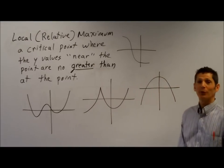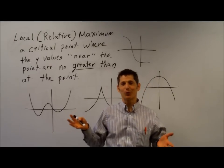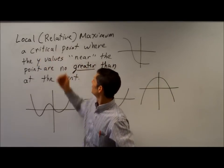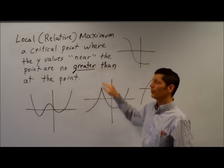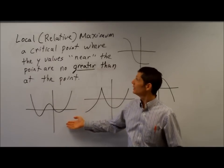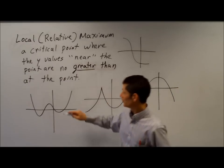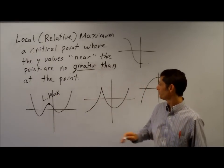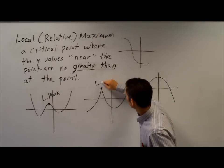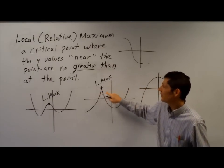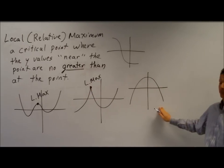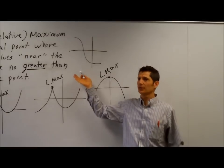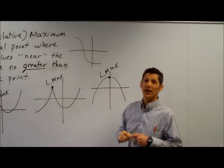Our third term is a local or relative maximum. It's very similar to a local or relative minimum, only I'm looking for points that are higher than the points nearby. It's a critical point where the y-values near the point are no greater than at the point. On my first function, how many local or relative maximums? Just one — I'll call this a local max, or L-max. If I take a step on either side, I go downhill. This last case has a critical point, but it's not a maximum or a minimum.